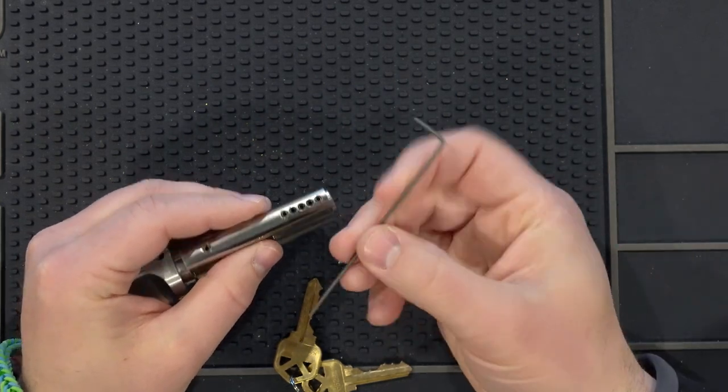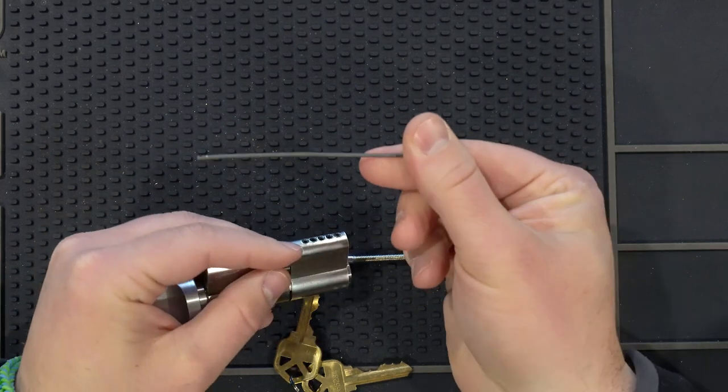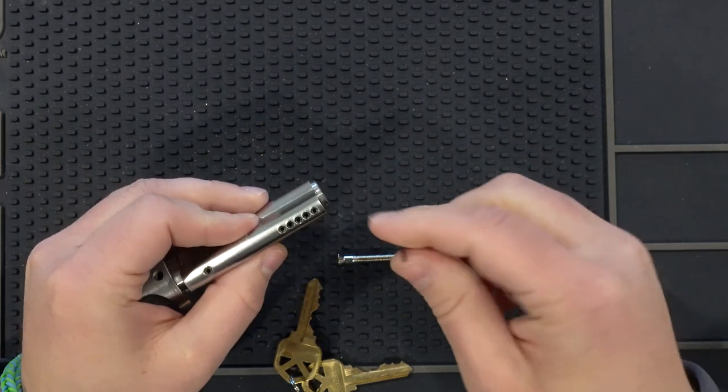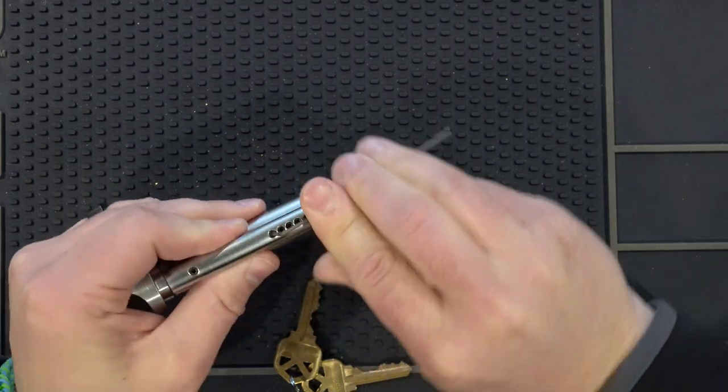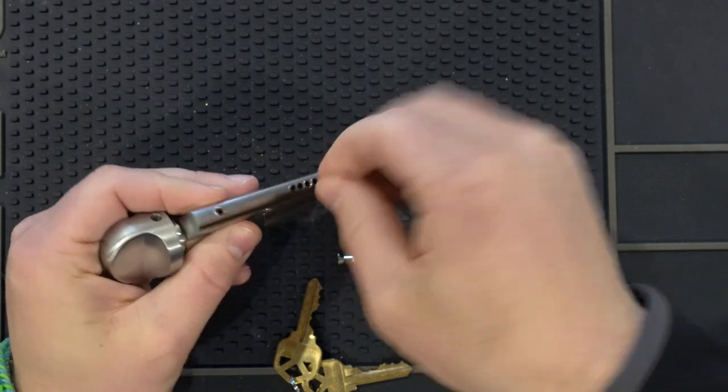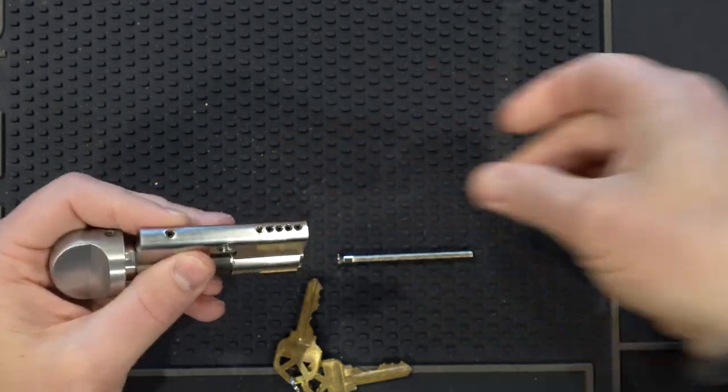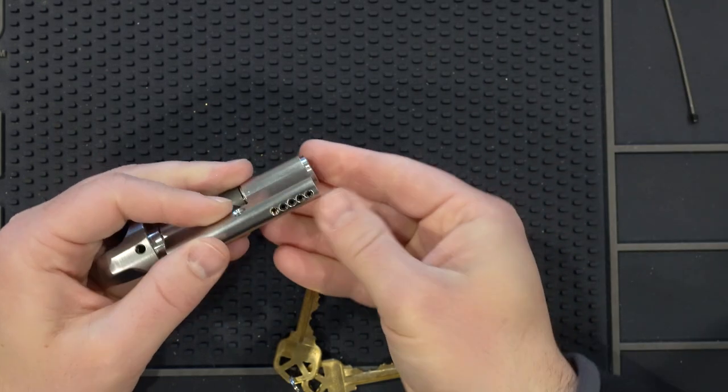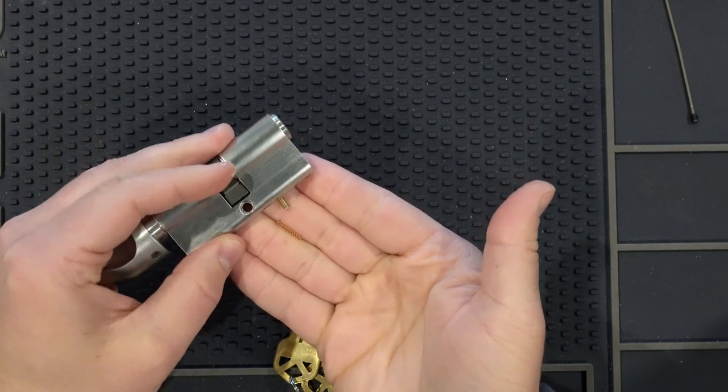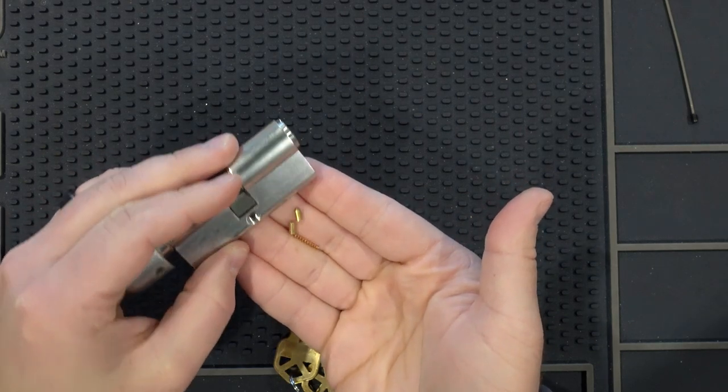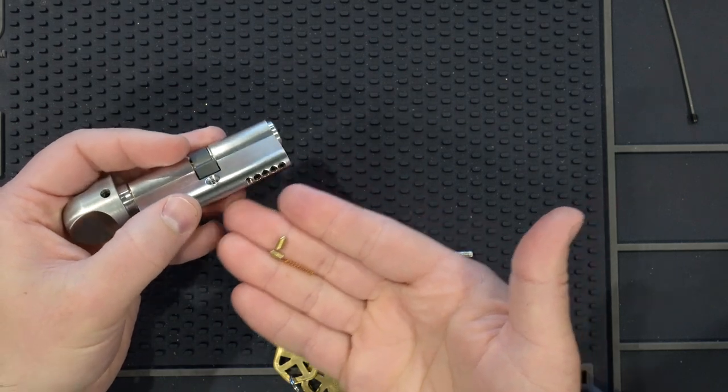This is a 1.5 millimeter allen wrench - it's a little bent, looks like we used it as a pry bar at some point. Let's go ahead and take one of these out. I'm going to put it in here just like that and set that to the side. Let me take this out here and you can see - there's the spring, there's the top pin, and then lastly the bottom pin.